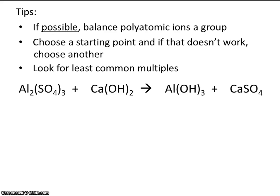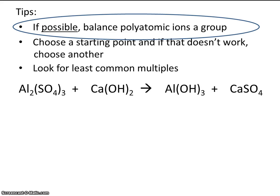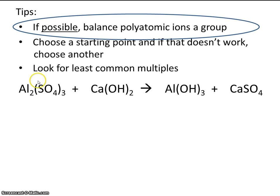Let's balance this reaction. If possible, we want to balance the polyatomic ions as a group — let's see if that works. We have sulfate on the left, and we also have sulfate on the right. We have hydroxide on the left, and we have hydroxide on the right. So in this case, we can balance the polyatomic ions as a group. It won't always work out, because sometimes on the left we might have sulfates, but then on the right we might have sulfur and oxygen existing separately. But in this case, we can do that.